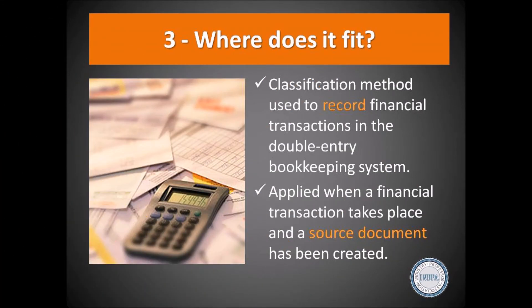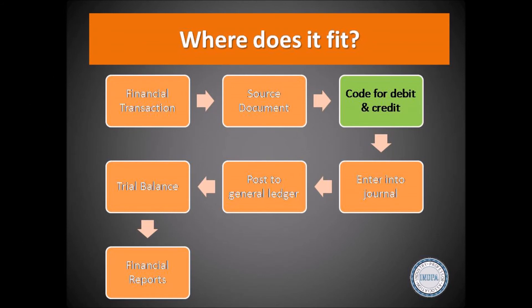Where does debits and credits fit into the accounting system? Debits and credits is a classification method used to record financial transactions in the Double Entry Bookkeeping System. This classification method is applied when financial transactions take place and a source document is created. The debits and credits classification method allows the financial information contained in the source document to be recorded in the books of the business, starting with what is known in accounting as the journal.